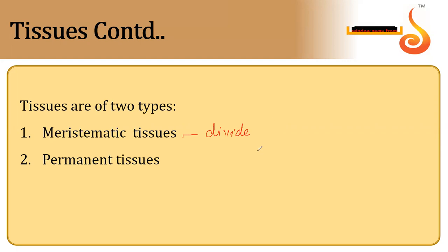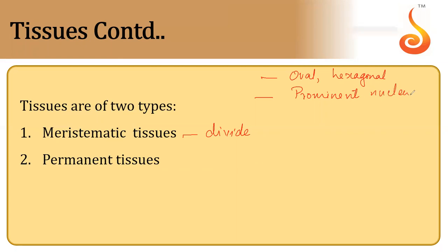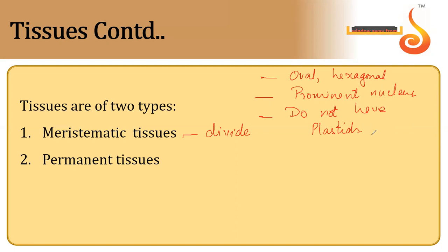The characteristics of meristematic tissues are: they are oval or hexagonal in shape; they have a very prominent nucleus; they do not have plastids — plastids being chloroplasts, chromoplasts and leukoplasts — so they cannot photosynthesize. They have no color and cannot store any food because they do not have plastids.